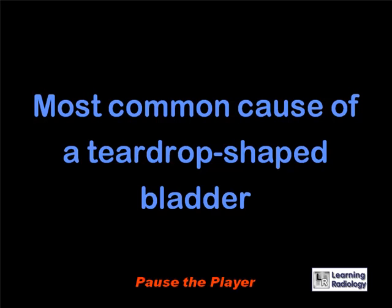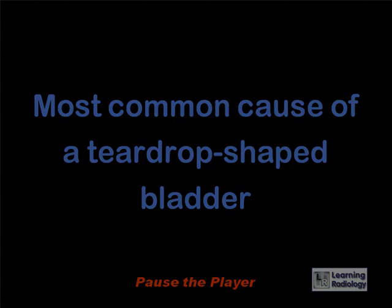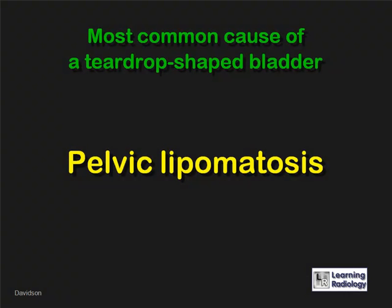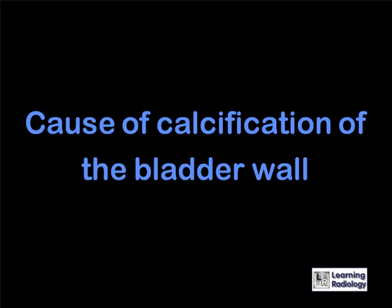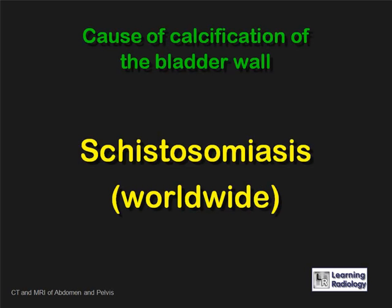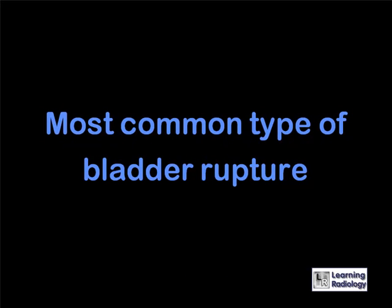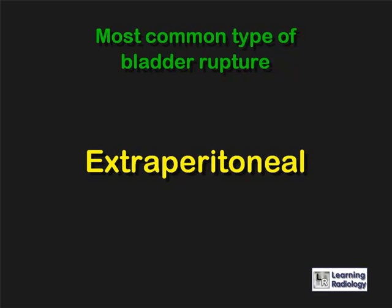What is the most common cause of a teardrop-shaped bladder? Pelvic lipomatosis. What is the most common cause of calcification of the bladder wall? Schistosomiasis. What is the most common type of bladder rupture? An extraperitoneal rupture.